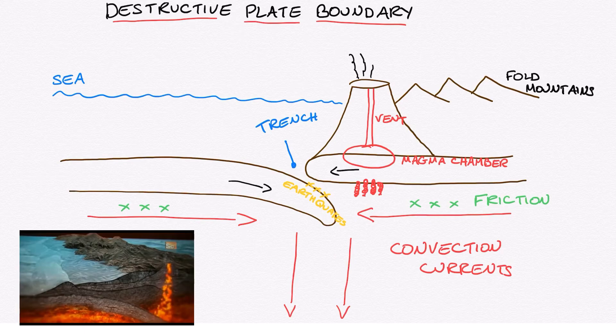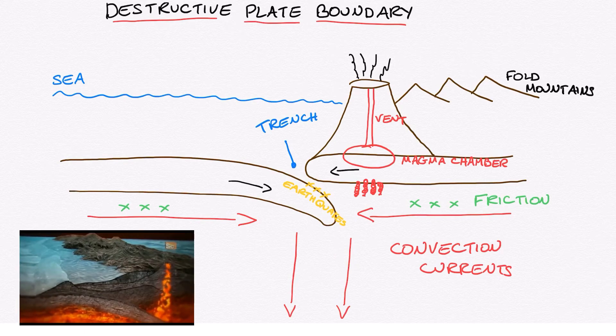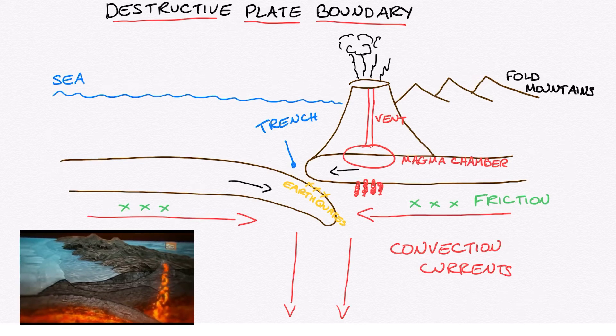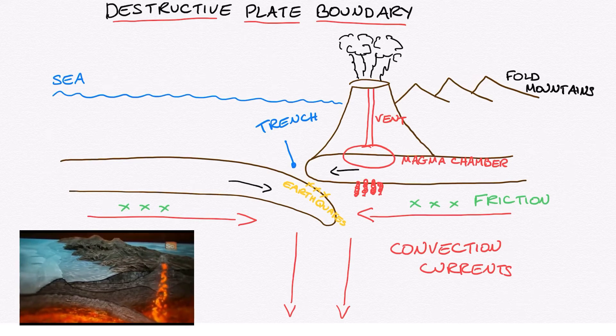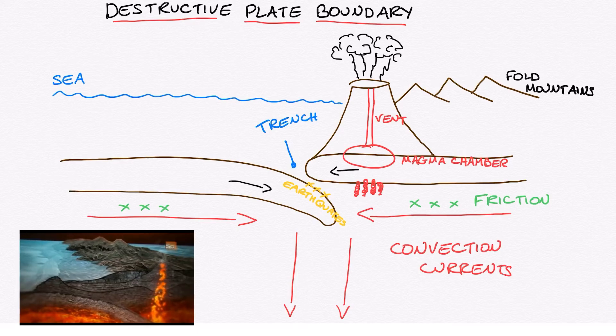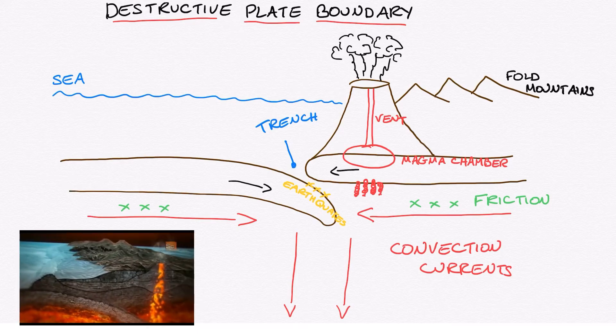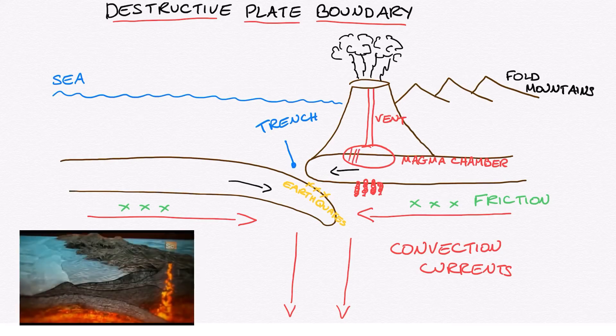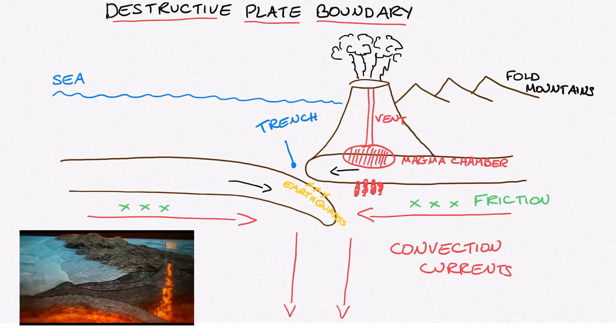Finally, we also get a trench that is formed. This is the very deep part of the ocean and it occurs where these two plate boundaries meet. Where the oceanic plate becomes subducted it leaves this gap or trench deep inside the ocean. A good example of one of these deep oceanic trenches is the Marianas trench that's found in the Pacific Ocean just off of the coast of the Philippines and Indonesia.